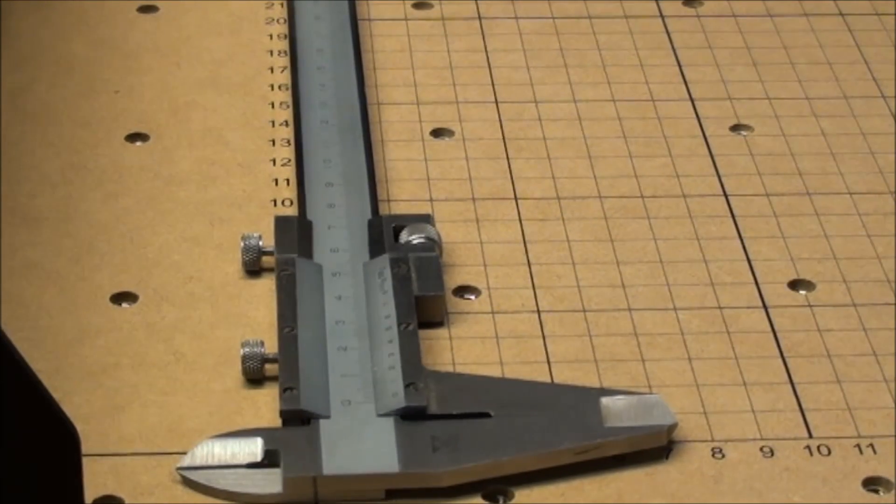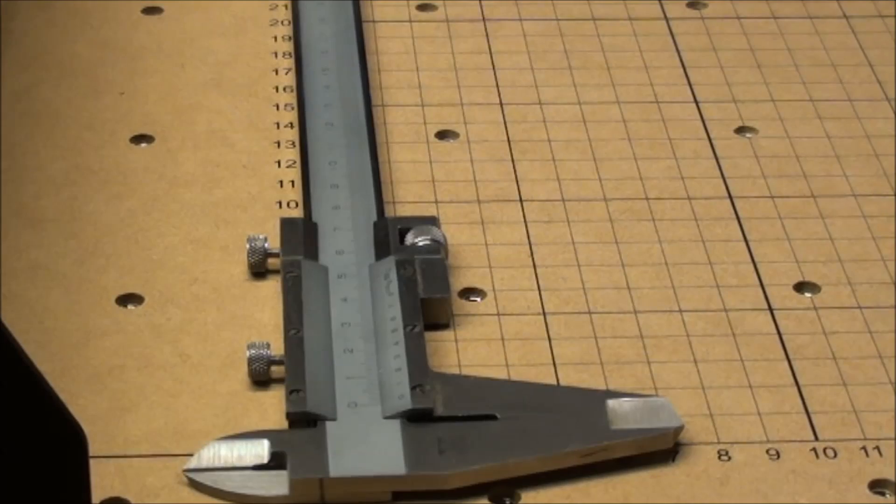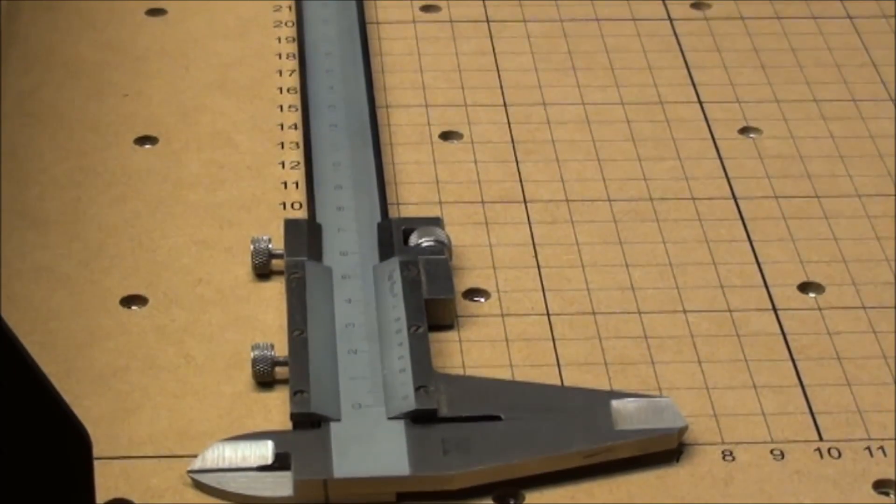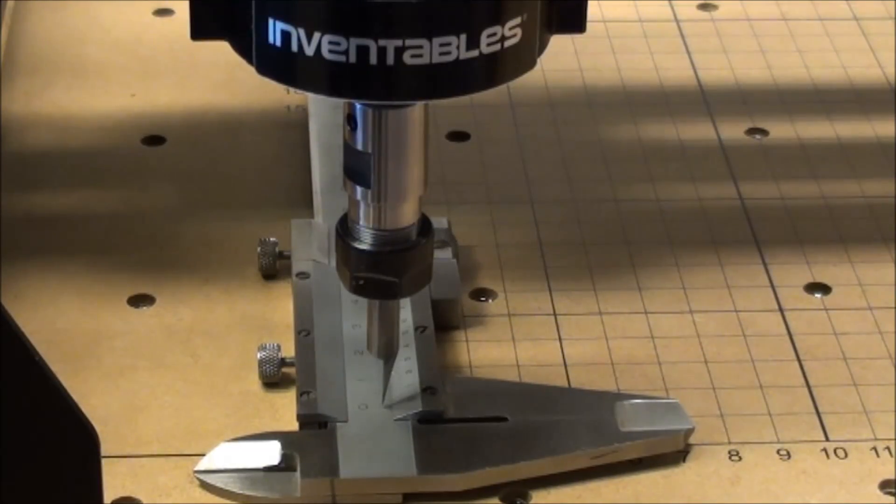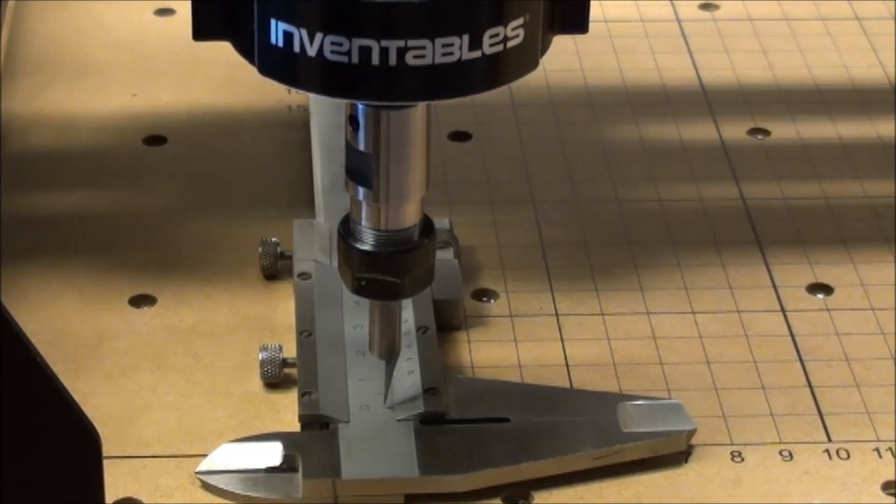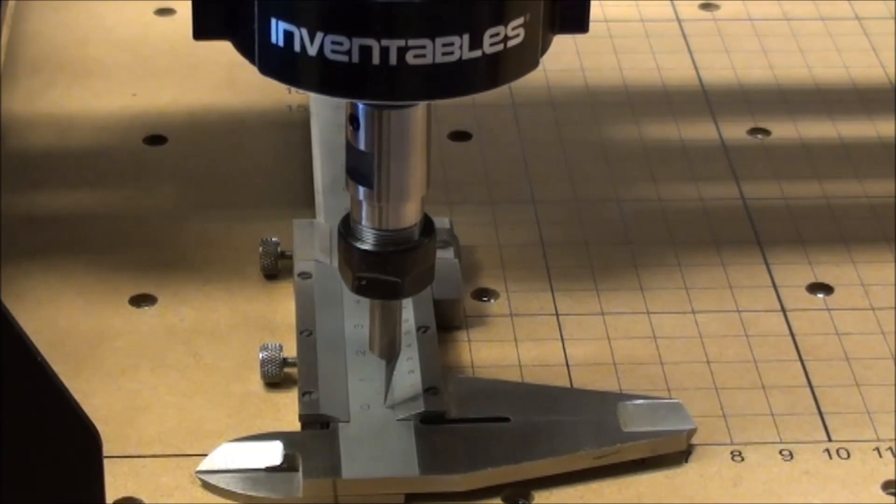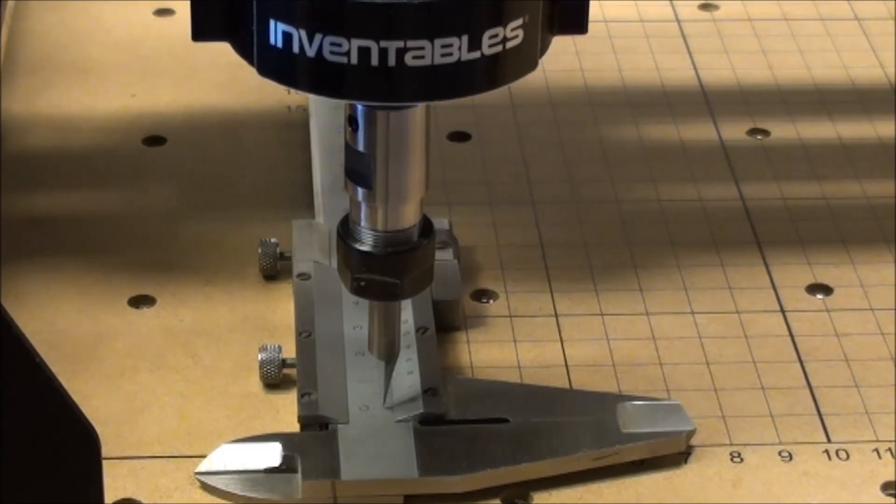I'll do the adjustment again. Now I have changed the parameter for Y axis the same way. I said 250 divided by the 249.5 that it actually made, and then times 40 which was the current value for steps per millimeter.